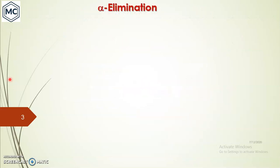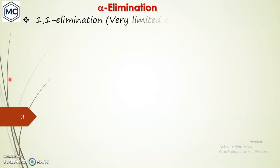Let's discuss first what is alpha elimination. From the name itself you can understand the difference between alpha elimination and beta elimination. Alpha elimination is a 1,1-elimination, so hydrogen and the leaving group are eliminated from the same carbon.